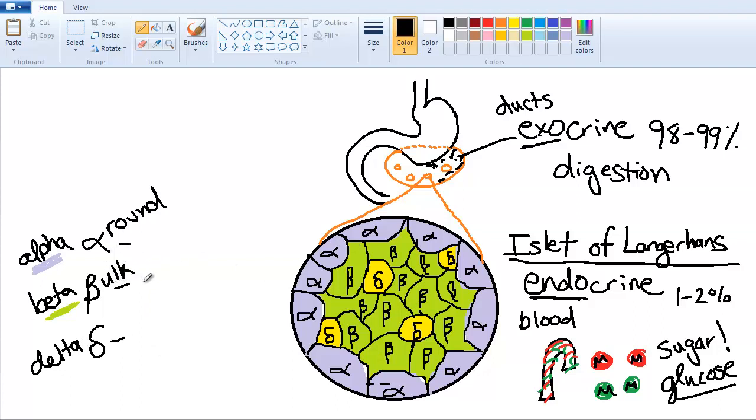All right. Let me tell you the hormones now. The beta cells secrete insulin, which I'm sure you're already familiar with. The alpha cells secrete glucagon. And the delta cells secrete somatostatin.